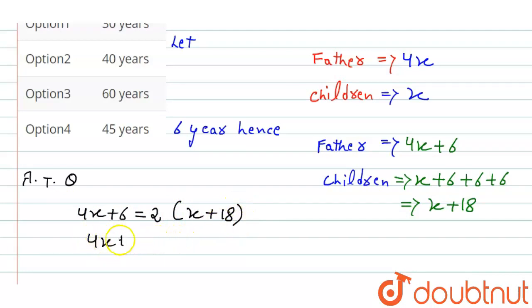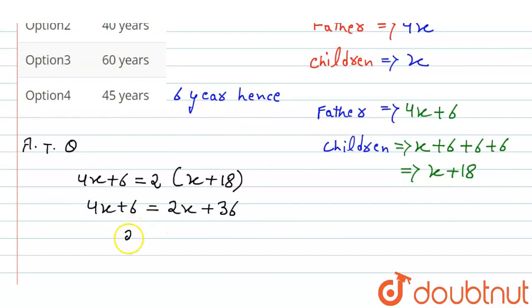Now we'll solve this. 4x plus 6 equals 2x plus 36. Simplifying: 4x minus 2x equals 2x, and 36 minus 6 equals 30. So x equals 15.